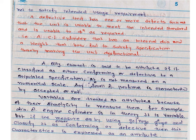A defective unit has one or more defects such that the unit is unable to meet the intended standard and unable to function as required. For example, a compressed engine cylinder that has both an internal diameter and a weight that fail to satisfy specifications, thereby making the unit dysfunctional — this illustrates a defective unit where quality is measured by more than one dimension.